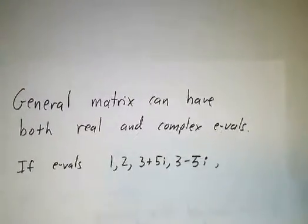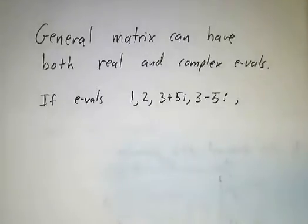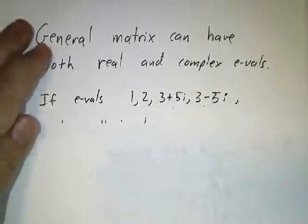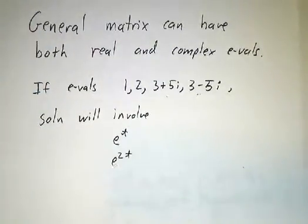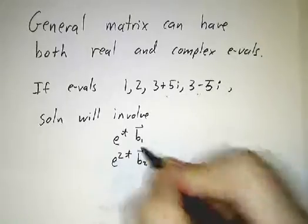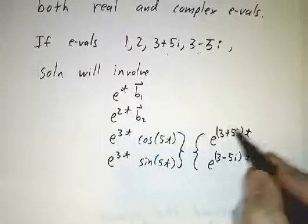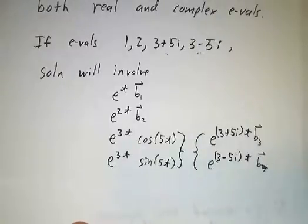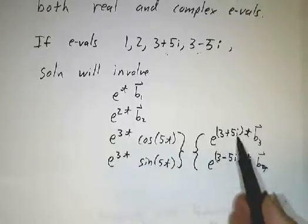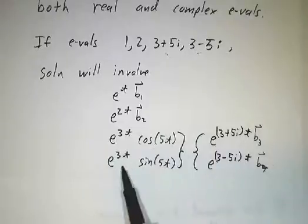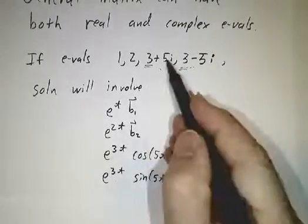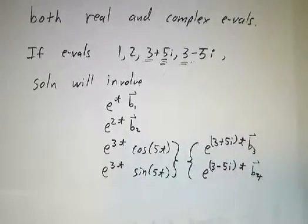Now, what would happen if we had a matrix that had both real and complex eigenvalues? Like, suppose you had eigenvalues 1, 2, 3 plus 5i and 3 minus 5i. Remember, they always come in conjugate pairs. Well, then you're gonna have one term in your solution that goes as e to the t, another term that goes as e to the 2t, and this is gonna be e to the t times the first eigenvector, and e to the 2t times the second eigenvector, and you're gonna have an e to the 3 plus 5i times the third eigenvector, and a 3 minus 5i times the fourth eigenvector, and when you unpack it, you write e to this, you're gonna wind up with some terms involving e to the 3t cos of 5t, and e to the 3t sin of 5t. Always, the real part tells you how fast you grow. The imaginary part tells you how fast you oscillate.